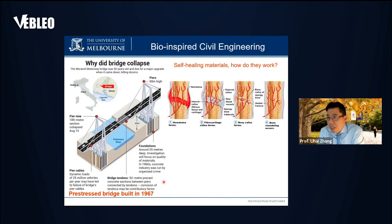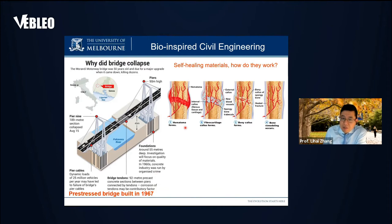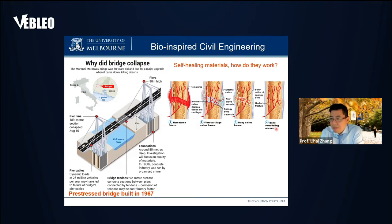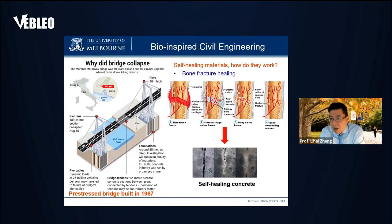If we look at how nature solves crack problems — when we have bone fractures, there are four stages of healing: hematoma formation, fibrous cartilage callus formation, bony callus formation, and finally bone remodeling, where the bone returns to its original state. If we understand how biology works, we can apply that knowledge to engineering — for example, the development of self-healing concrete, which could have prevented such a bridge disaster.